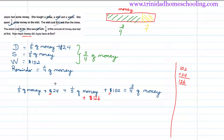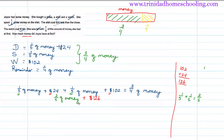Now let's add the fractions of money. We have one-fifth and one-fifth — same denominator, so we just add the numerators to get two-fifths. So we have two-fifths of money plus $126 on one side, and that equals three-quarters of the money.